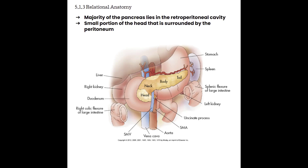Posterior to the pancreas are the connective prevertebral tissues, the portal splenic confluence, superior mesenteric vessels, the aorta, inferior vena cava, and the lower border of the diaphragm. The stomach, duodenum, and transverse colon are going to form the superior and lateral borders of the pancreas.